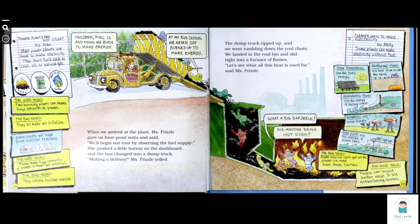When we arrive at the plant, Miss Frizzle gave us heat-proof suits and said we begin our tour by observing the fuel supply. She pushes a little button on the dashboard and the bus changes into a dump truck, making a delivery. Miss Frizzle yelled, children, fuel is anything we burn to make energy. At my old school, we never got to burn up to make energy.